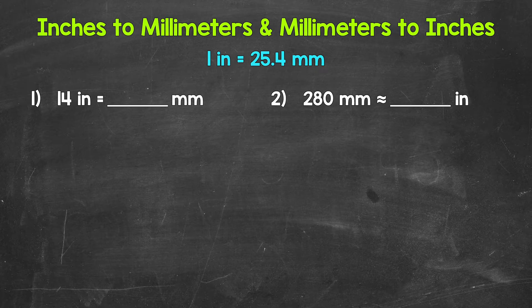To start, there are 25.4 millimeters in an inch. In other words, one inch equals 25.4 millimeters.